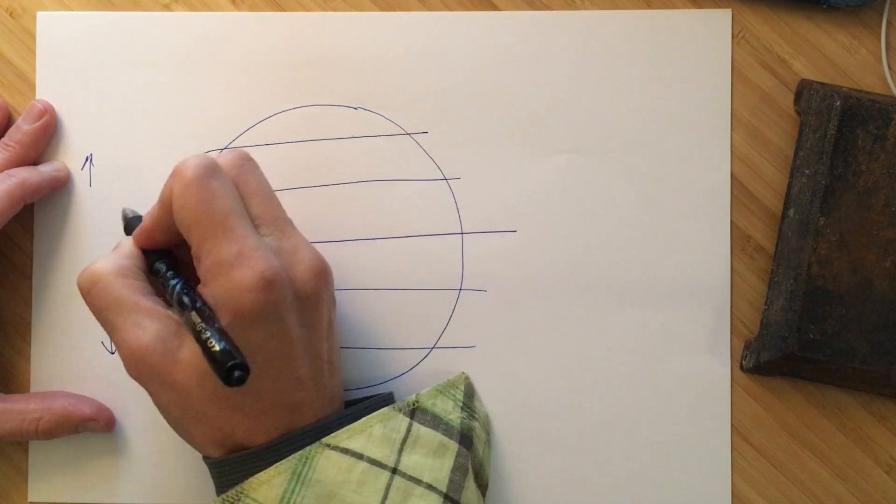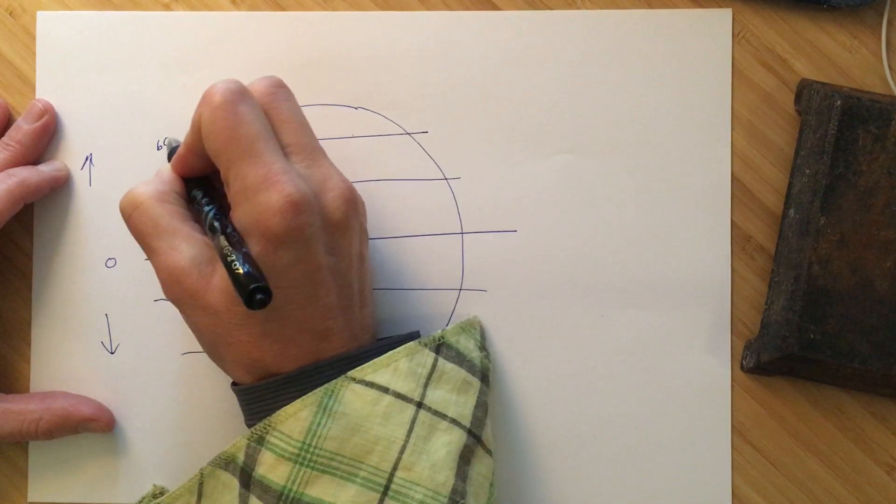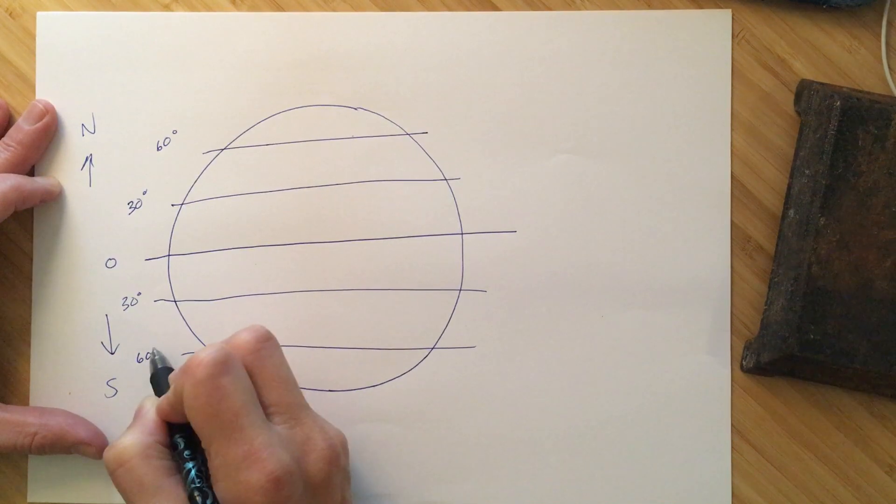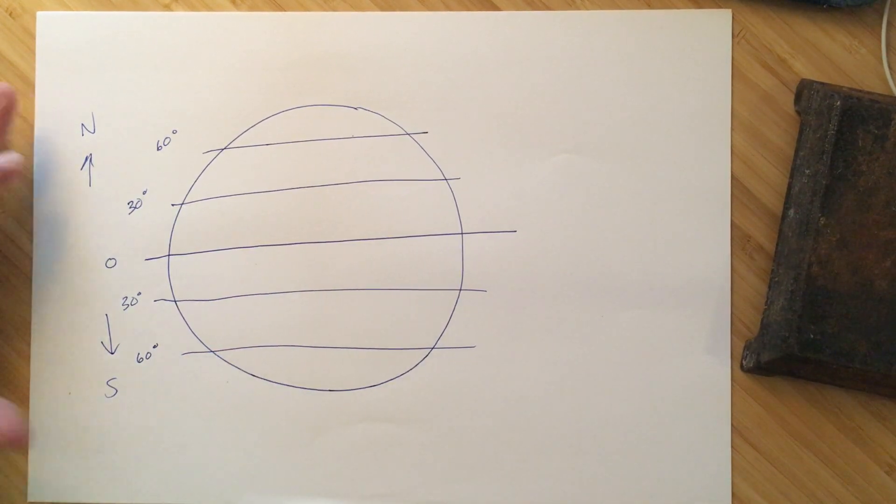So 30 and 60, so here we've got 30, 60, so that's north, and we also have 30 and 60 south, right? Okay.